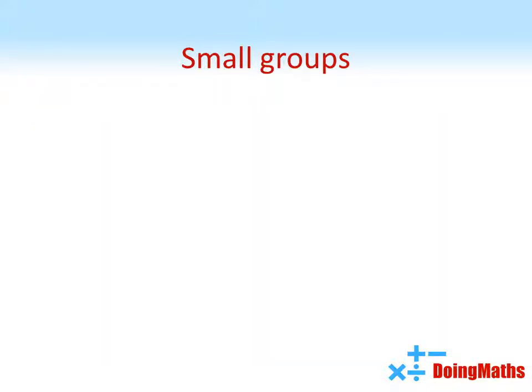So let's start off by looking at some small groups. Suppose you've got two people in a room. They're going to shake hands. Obviously there's one handshake there. Person A shakes hands with person B.